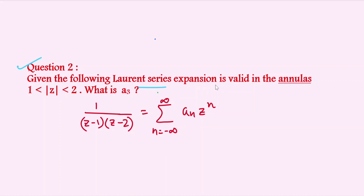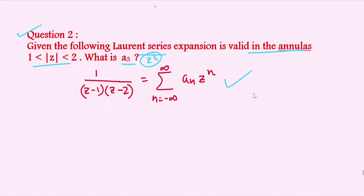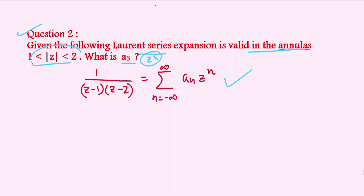Question 2 says: given the Laurent series expansion valid in the annulus 1 < |z| < 2, what is a₃, the coefficient of z³? The series is given by 1/(z−1) · 1/(z−2) = Σ from n = −∞ to ∞ of aₙ · zⁿ. We divide the given region into two sections.